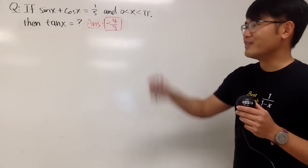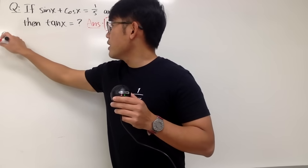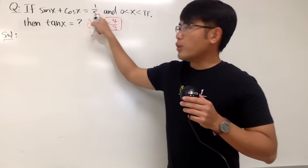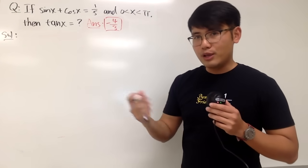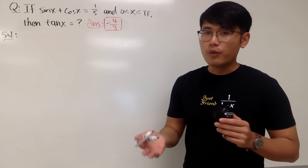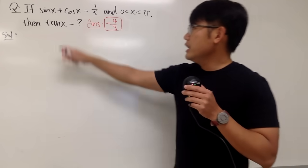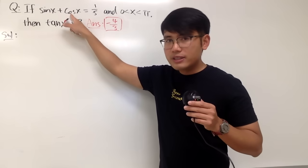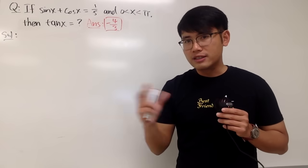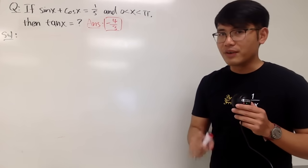I will show you how to solve this equation — it's actually a pretty cool equation. This right here is my solution. If you look at the original equation, we have both sine and cosine. If you know sine plus cosine equals 1 over 5, and the input x is between 0 and pi, you can actually find out what sine and cosine are individually. I will do that first.